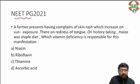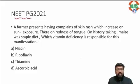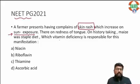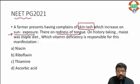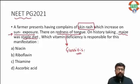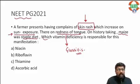This is a NEET-PG PYQ. A farmer presents with a complaint of skin rash which increases on sun exposure. There is also redness of the tongue — glossitis is present. On history, maize was the staple diet. So we have dermatitis, glossitis, and maize as the staple diet. Which vitamin deficiency is responsible for this?